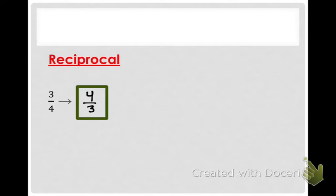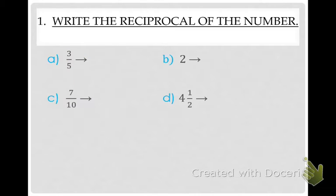Some look as easy as this, and some are a little bit more difficult. Let's look at the first one, three-fifths. MJ, what would three-fifths' reciprocal be? Five-thirds. Five-thirds is correct. And box your answer in.